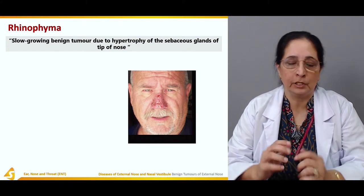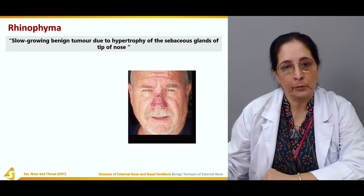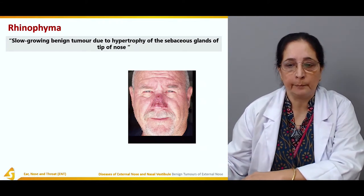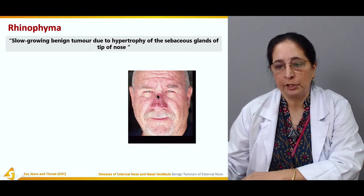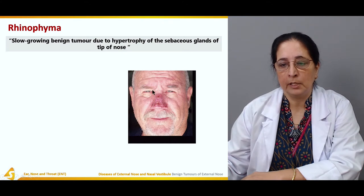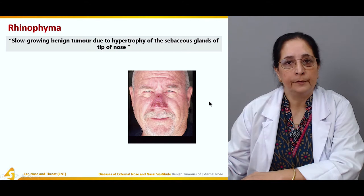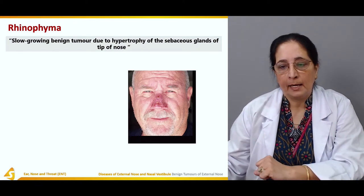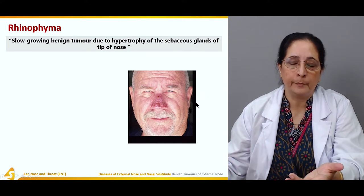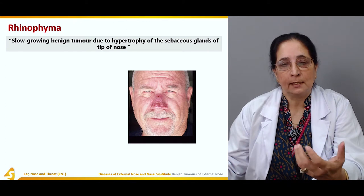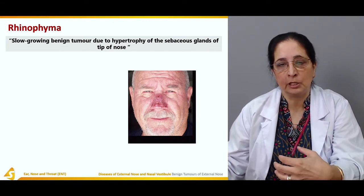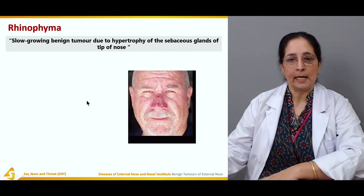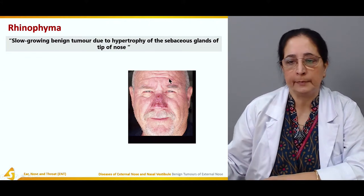Another condition to mention is rhinophyma, which is also a slow-growing benign tumor. It is due to hypertrophy of the sebaceous glands at the tip of the nose. The sebaceous glands produce sebum, and hypertrophy leads to increased secretion, which can cause clogging, blocking, or obstruction.